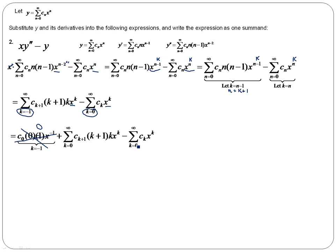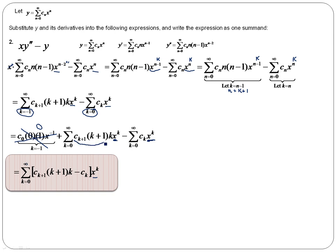And you can combine these two summations into a single summation. When we combine them, we're going to factor out the x to the k. That's my x to the k that I factored out. My sum goes from zero to infinity. And my first term is c_{k+1} times k plus one times k. That's from my first term up here. And my second term is minus c_k.